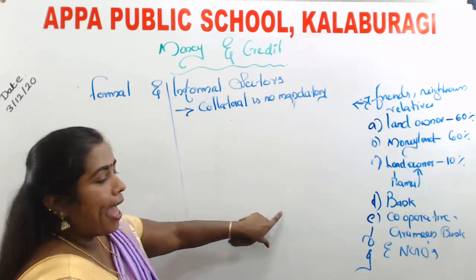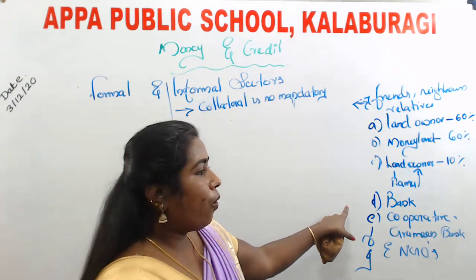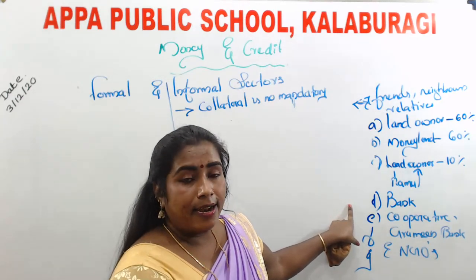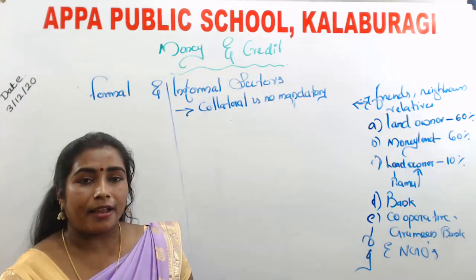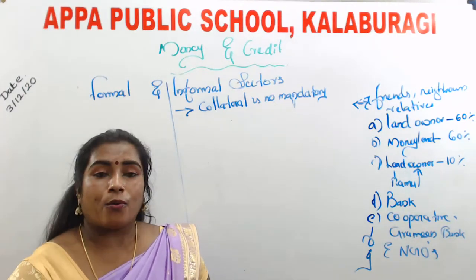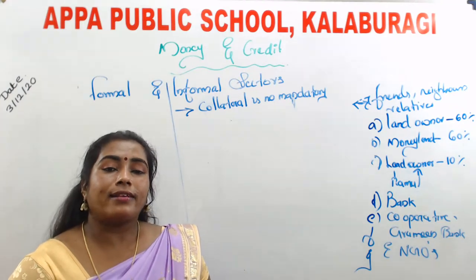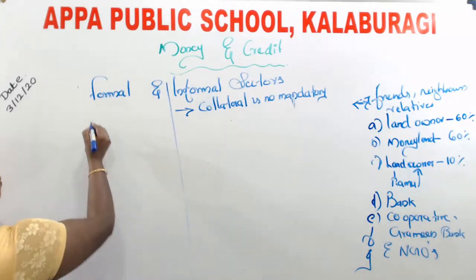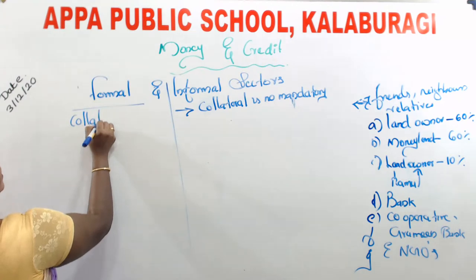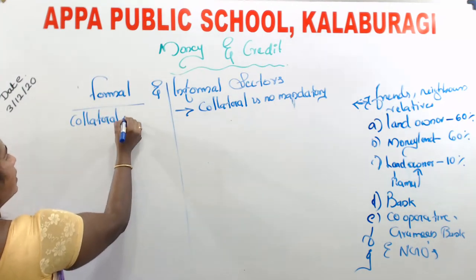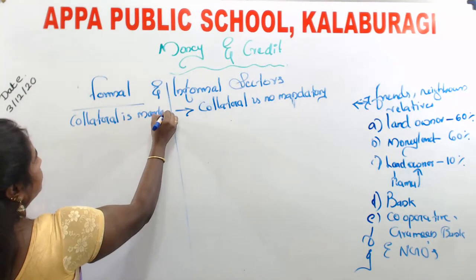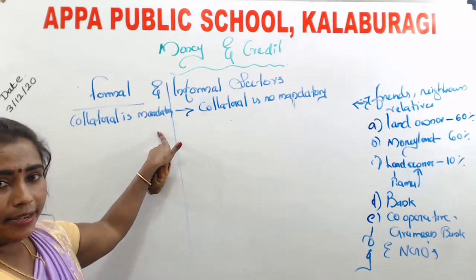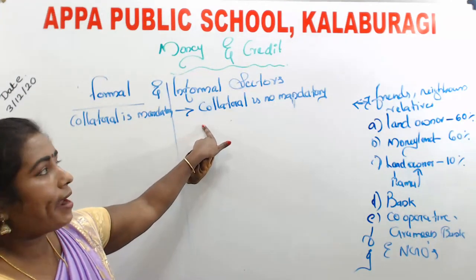But in the case of a bank, if you want to get a loan from the formal sector, you have to submit all the terms and conditions of credit — including documentation, the installment schedule, and the interest rate. In formal sectors, collateral is mandatory. That is the main difference between formal and informal sectors of credit. In the informal sector, collateral is not mandatory because friends, neighbors, relatives, or moneylenders are from the same locality and know each other.